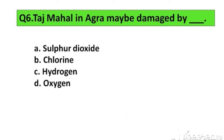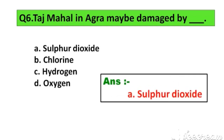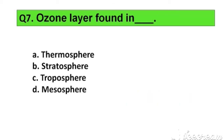Question number 6. Taj Mahal in Agra may be damaged by: Option A. Sulphur dioxide, B. Chlorine, C. Hydrogen, D. Oxygen. The right answer is Option A. Sulphur dioxide.